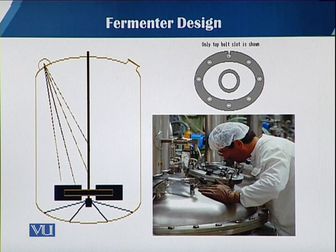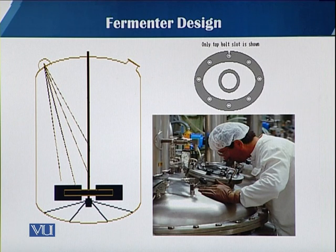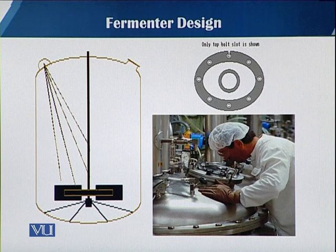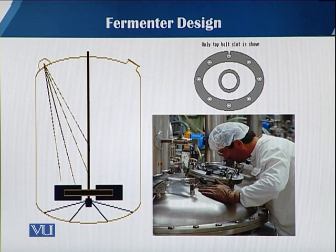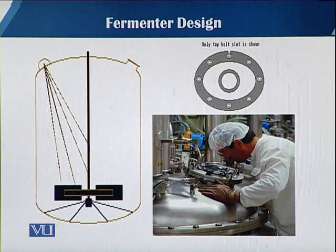You can see in this slide a worker working on a fermenter and visualizing inside it. This part of the fermenter is very critical because the glass used must have the property to withstand sterilization conditions as well as be very transparent. As discussed with seals and O-rings, these are properly fixed on the screen or window.